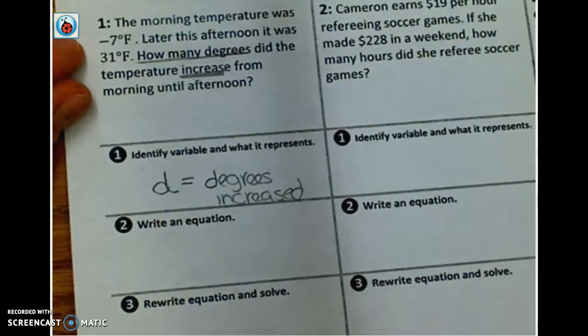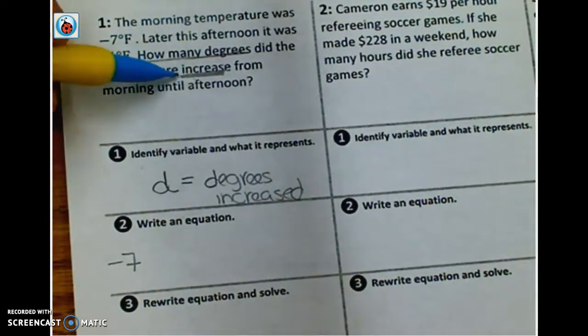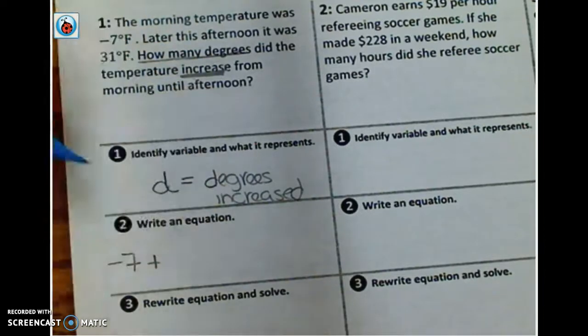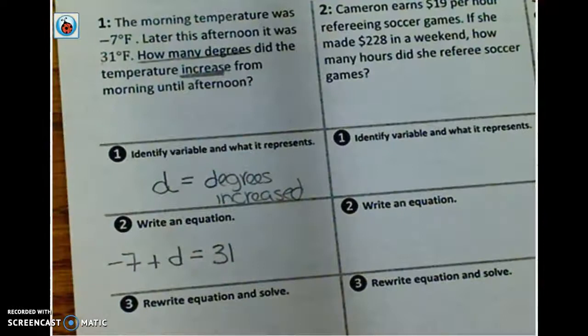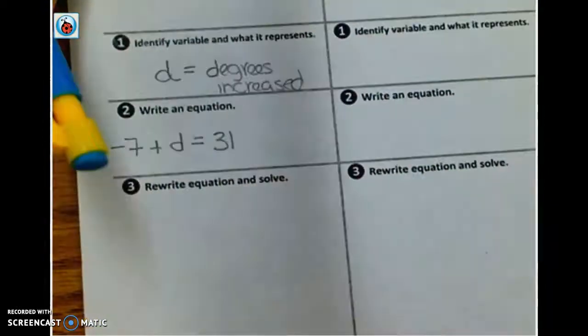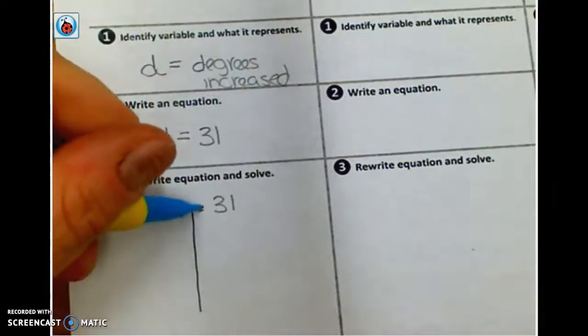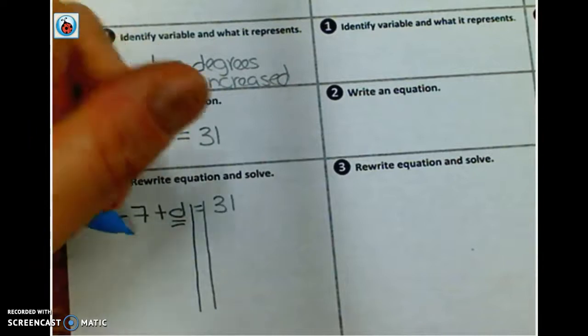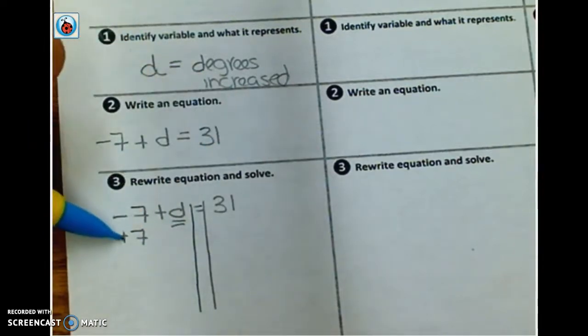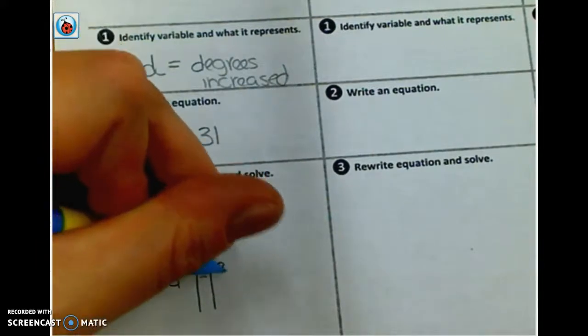Alright? So now that we have our variable, we're going to go ahead and write an equation. Well, we kind of build from what we already know. It started, the temperature started at negative 7. We want to know how much it increased. Well, increase means to add. So what number was added to it? What temperature was added to it to give us a result of 31? So that's how you would build your equation. Alright? And now we're going to go ahead and just rewrite the equation and show our math work for solving it. Don't forget your railroad tracks. And you're going to do the opposite operation. Our goal is to get the variable by itself. So instead of a negative 7, I will do a positive 7. Again, because it's like saying subtracting 7. So I'm going to add. I'm not really doing an opposite sign. It still is the opposite operation. Alright? Shows that that cancels out and that I get D equals 38.